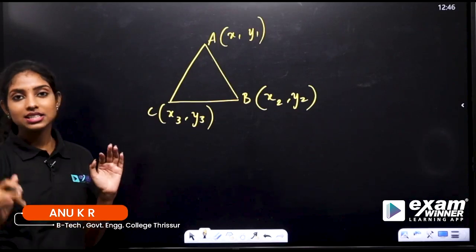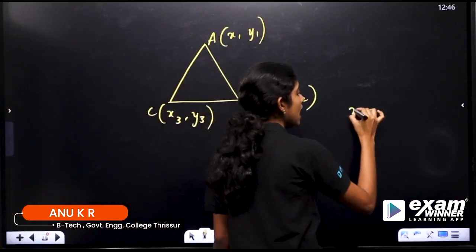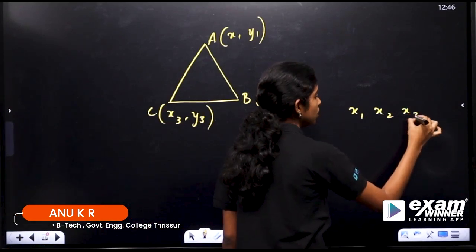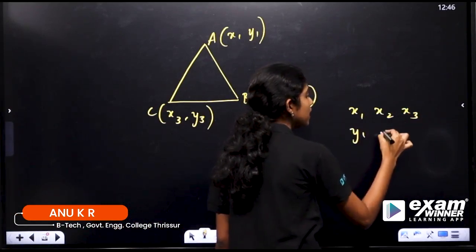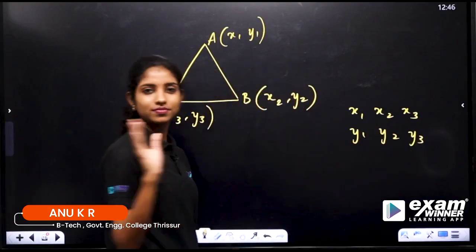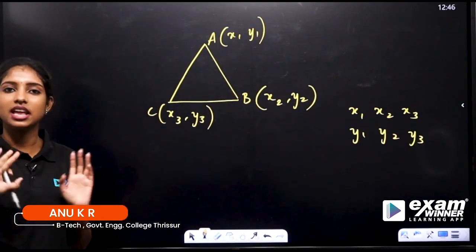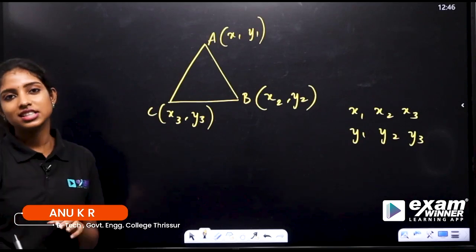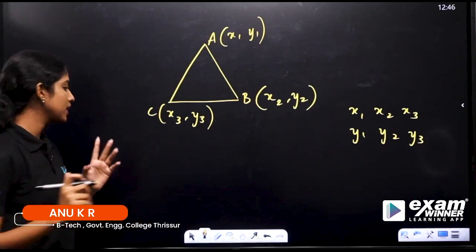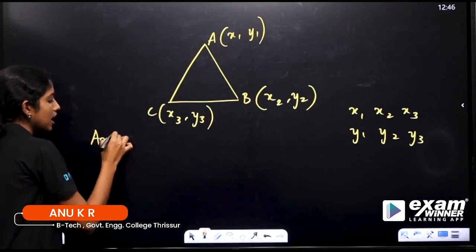This is what you have learned, and we have to learn about this. We have x1, x2, x3 and y1, y2, y3. We have the x coordinates and the y coordinates. What do we do? We find the area — the area of the triangle ABC.